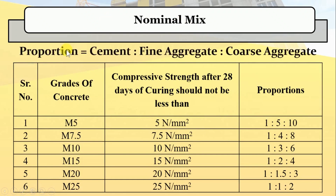Now let's understand nominal concrete mix. The following table shows proportions with respect to the grade of concrete. For general guidance, nominal mixes correspond approximately to the different grades, where the proportion is the ratio of cement to fine aggregate to coarse aggregate. For example, for M5 grade, the proportion is 1:5:10. For M7.5, it is 1:4:8. For M10, it is 1:3:6. For M15, it is 1:2:4. For M20, it is 1:1.5:3. And for M25, the proportion is 1:1:2. Sufficient water is added to make the mix workable. In these methods, the grading of aggregates sometimes cannot be achieved and there is no control over the strength of concrete.